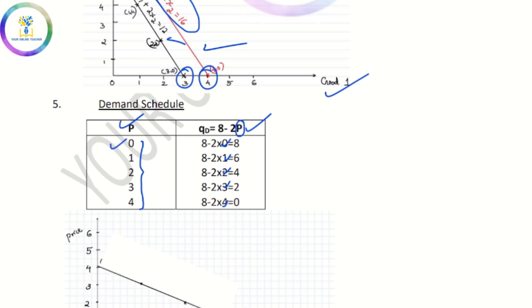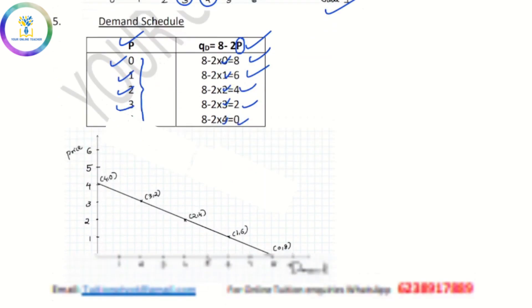If price is 0, quantity is 8. If price is 1, quantity is 6. You can rank these as points on a graph, and then mark it from the y-axis to the x-axis. The line is normal.